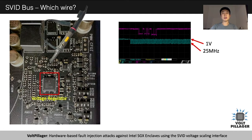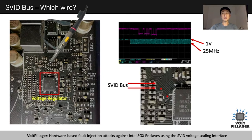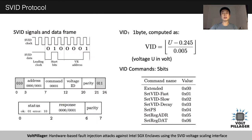We found a 25 MHz clock and data signal operating between 0V and 1V, which matched exactly the spec we knew for SVID bus. We found two pins — actually, there are two test points left by the motherboard manufacturer for these two wires. With the help of a logic analyzer and some testing, we reverse engineered the SVID protocol.